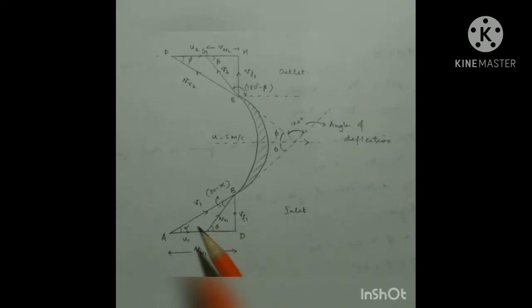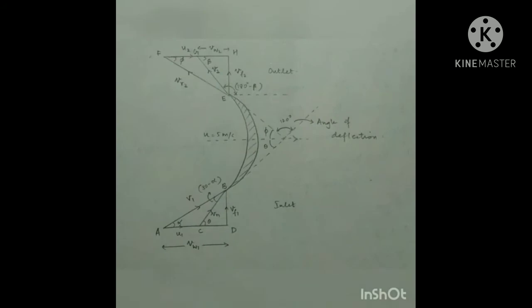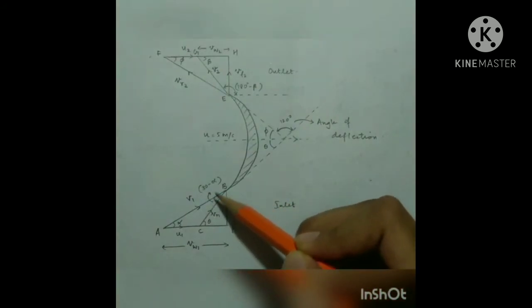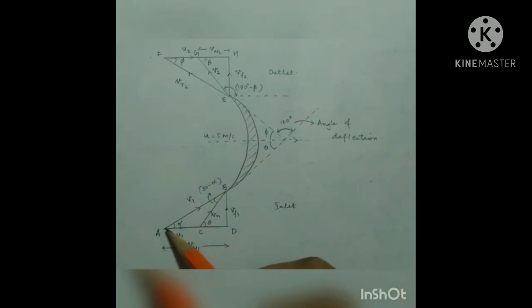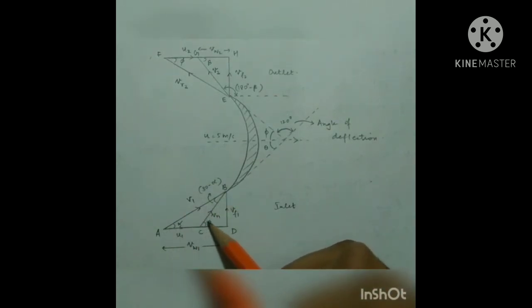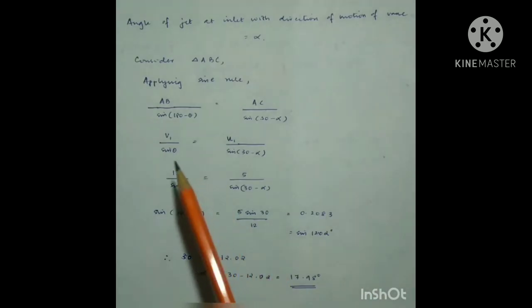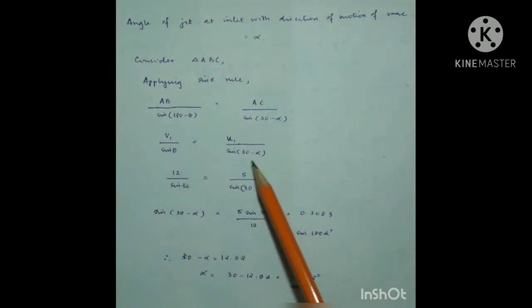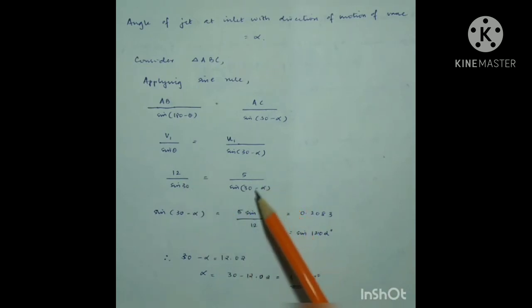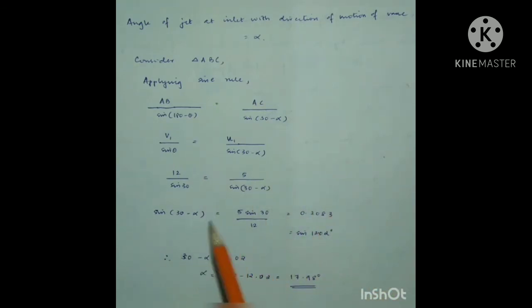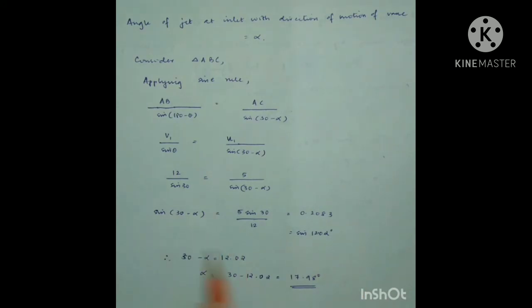For the first part — finding alpha — we consider triangle ABC and apply the sine rule. The relevant angle is (30° − alpha). Applying the sine rule gives: V1 / sin(theta) = U1 / sin(30° − alpha), which is 12 / sin(30°) = 5 / sin(30° − alpha). Solving, we get sin(30° − alpha) = sin(12.02°), and therefore alpha = 17.98°.